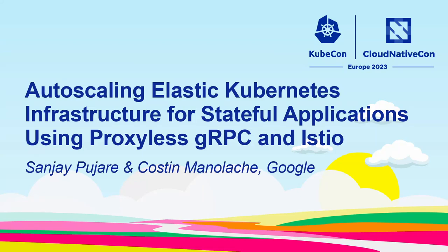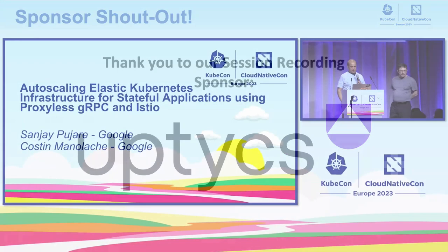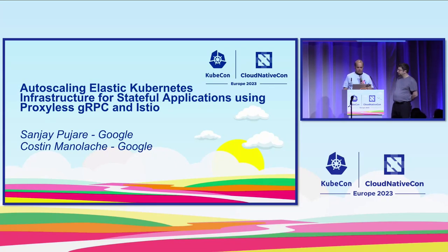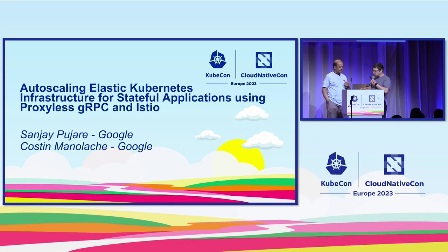Hi, this talk is about auto-scaling elastic Kubernetes infrastructure in the presence of stateful applications that use Proxyless gRPC and Istio. My name is Sanjay Pujari, and I am an engineer in Google Cloud. And I'm Kostin Manolaki, working on Istio, also at Google.